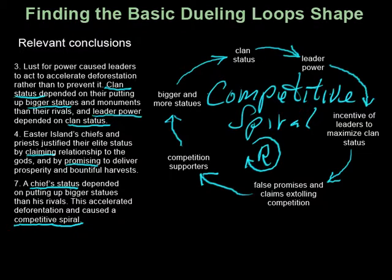Now we have the complete loop — the competitive spiral that Diamond spoke of. It is indeed at the heart of why Easter Island and other societies collapsed. But why didn't Diamond draw this loop? Because structural thinking is not a standard human system behavior analysis tool in fields like anthropology, sociology, etc. Until it is, these fields will remain unable to make any substantial contributions to solving the sustainability problem. Now let's pop this loop into a different modeling tool and see how much further we can take the work of Diamond and others. As we do this, you will gradually see the basic structure of the dueling loops emerge, because the dueling loops are present in all political systems, including Easter Island.